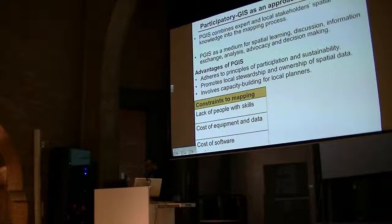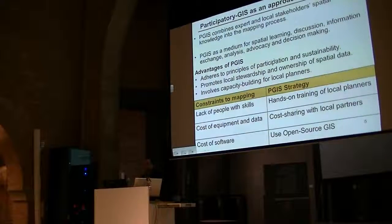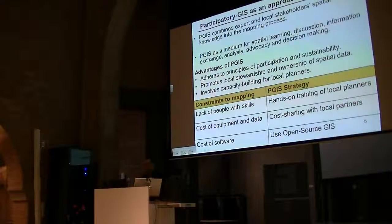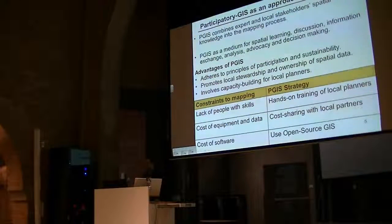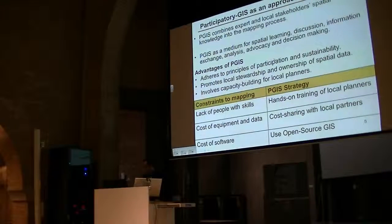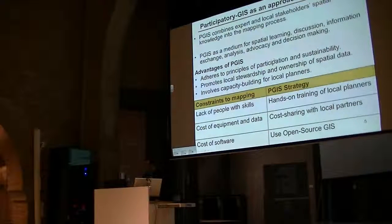There are several constraints to mapping, and these are the strategies within participatory GIS. People have lack of GIS skills — we do hands-on training of local planners. If you have high cost of equipment and data, we try to do cost sharing with local partners. We ourselves provide training for free, we provide the software — and of course it's not Windows. The cost of equipment is shared between us and the local authorities, and the cost of software is dealt with through the use of open source GIS.